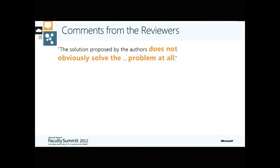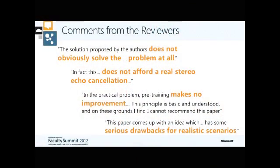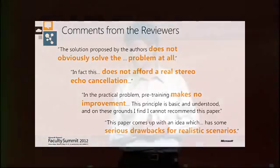A funny thing about this paper is that it got rejected. I took some curiosity in this since Kinect is one of the things we're most proud of in our lab, and I read the reviews. The reviews are quite revealing — one says 'the solution proposed does not obviously solve the problem at all,' and another says 'the paper comes up with an idea which has serious drawbacks for realistic scenarios.' Of course, the reviewers couldn't have known that the paper's ideas would be in over 16 million homes by the next Christmas.